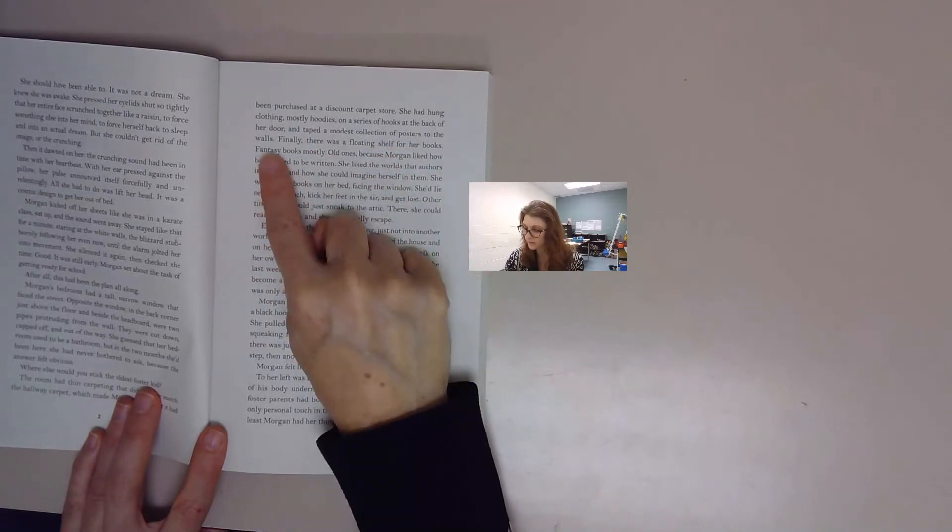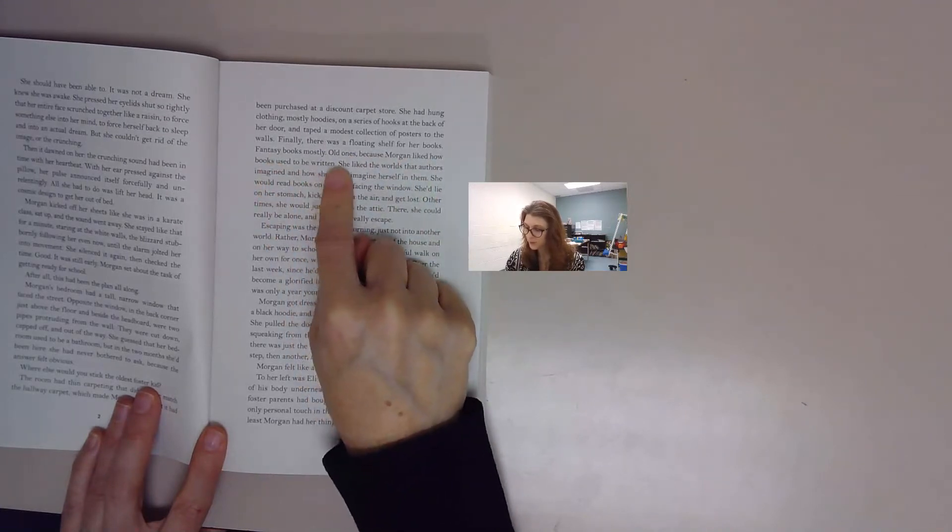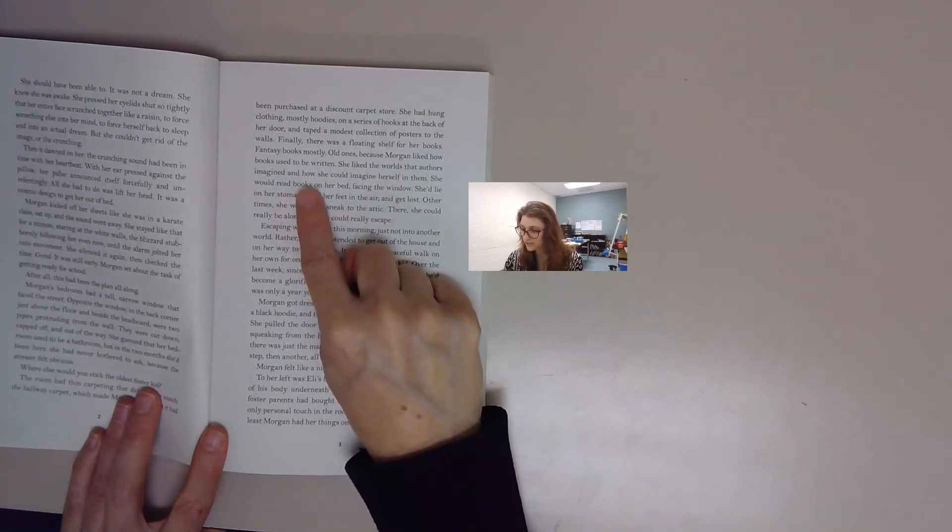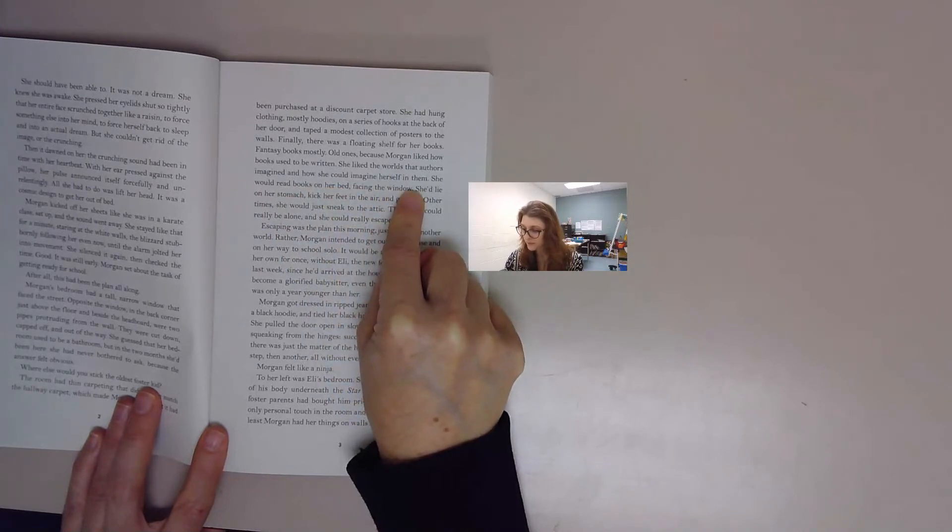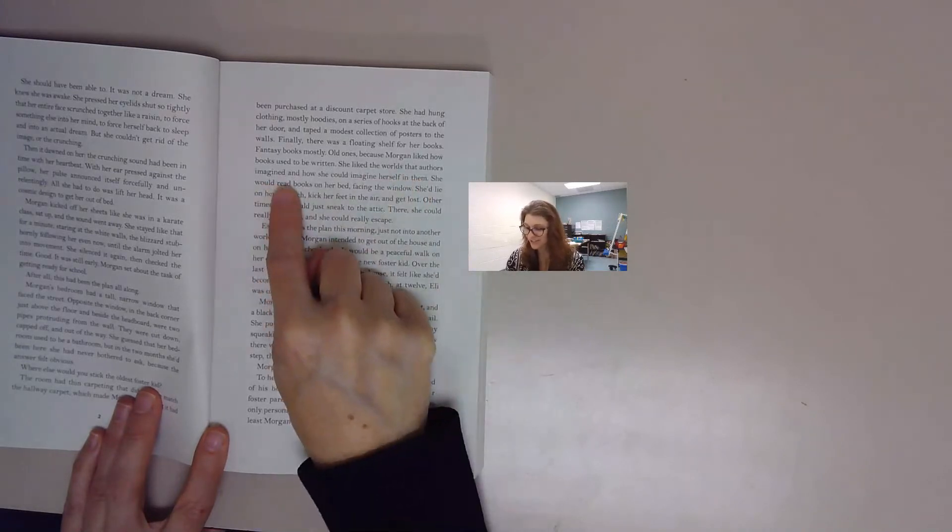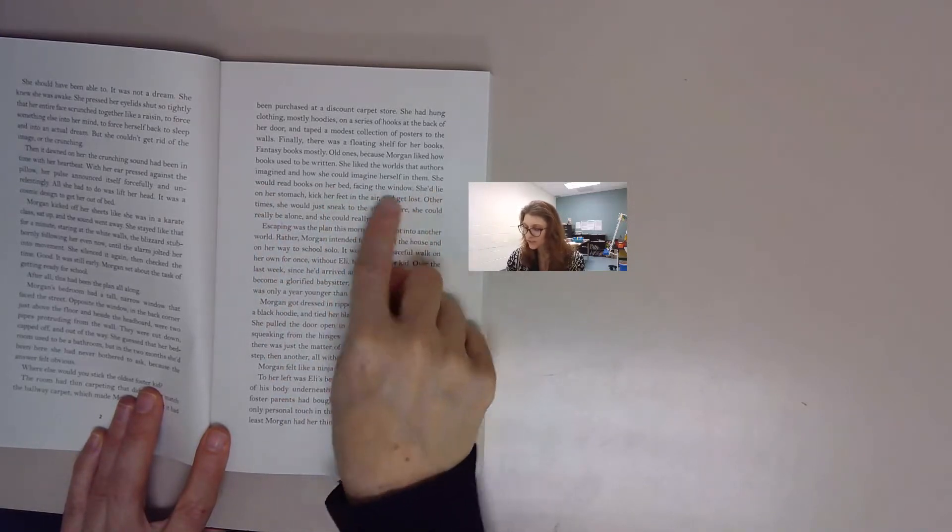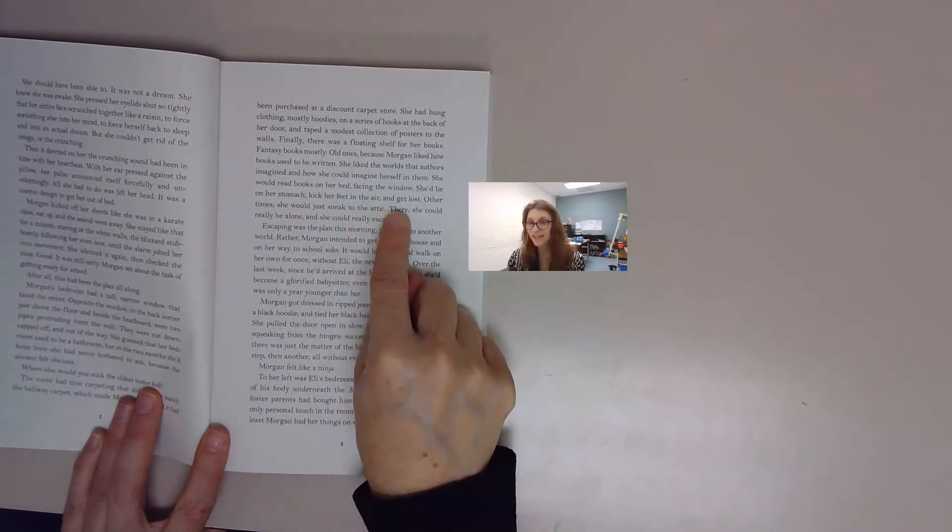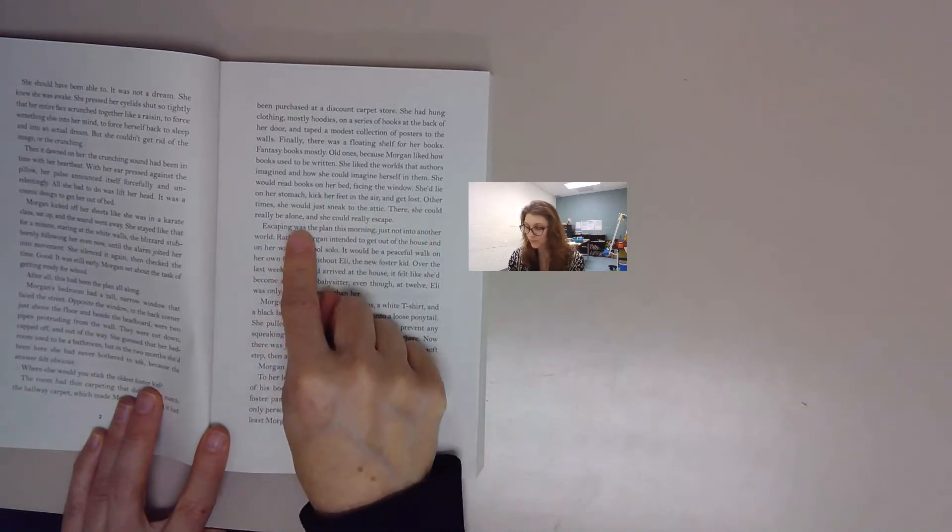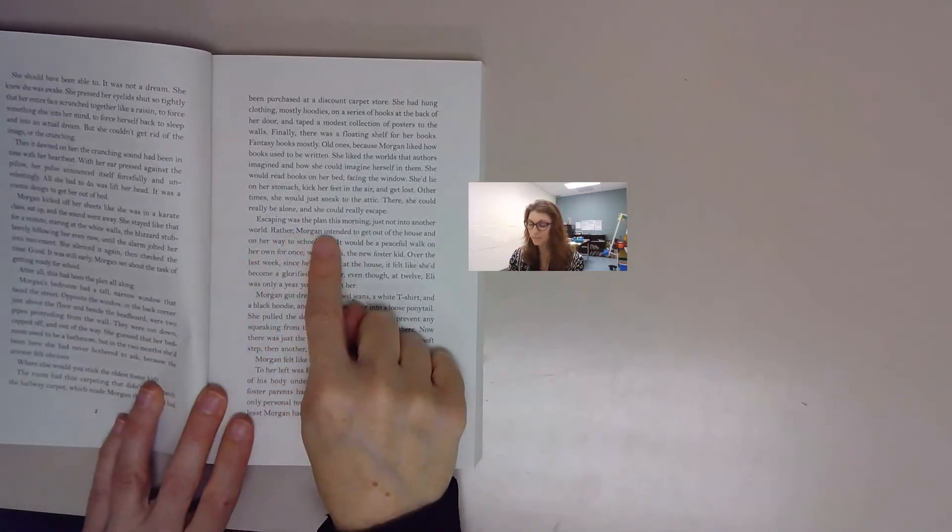She had hung clothing, mostly hoodies, on a series of hooks at the back of her door and taped a modest collection of posters to the walls. Finally, there was a floating shelf for her books, fantasy books mostly, old ones, because Morgan liked how books used to be written. She liked the worlds that authors imagined and how she could imagine herself in them. She would read books on her bed facing the window, lie on her stomach, kick her feet in the air and get lost. Other times she would just sneak to the attic. There she could really be alone and she could really escape. Escaping was the plan this morning.